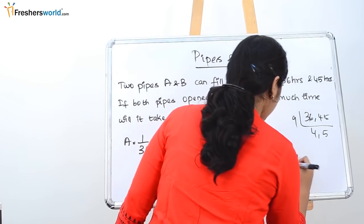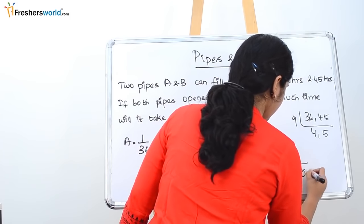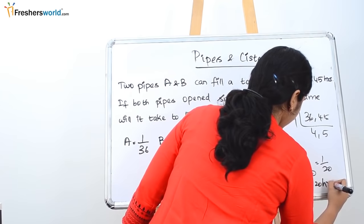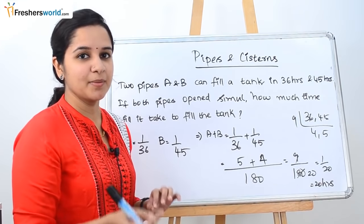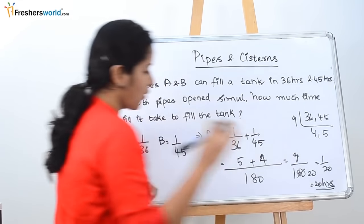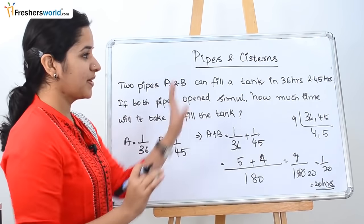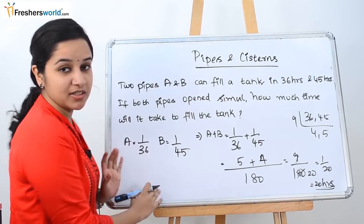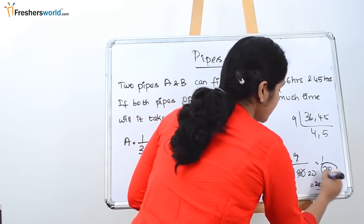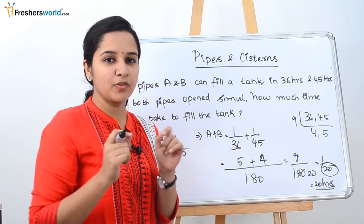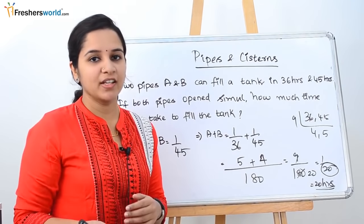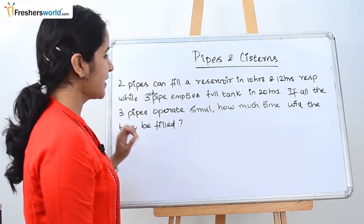Finding the LCM of 36 and 45 gives 180. So we get 5/180 plus 4/180 = 9/180, which simplifies to 1/20. That means it takes 20 hours. The time taken to fill the tank by both pipes A and B is 20 hours. We represented the rates as 1/36 and 1/45, added them, and the denominator of the result gives the total hours.